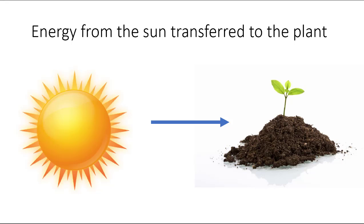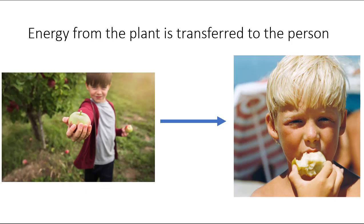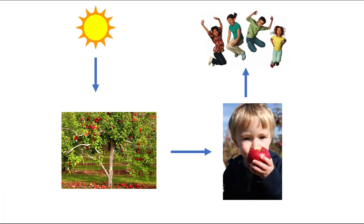Here's an example. If you want to grow a plant, you need sunlight — the energy from the sun is being transferred into the plant. That energy in the plant can grow into an apple. And that energy from the apple is transferred to a person when they eat it. The energy from the sun is transferred to the apple tree, which is transferred to the person when they eat it, and that energy is transferred into kinetic energy as they dance or play.